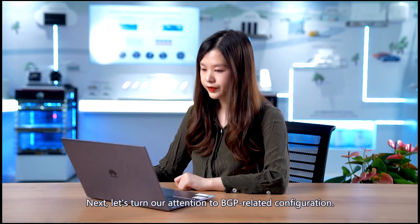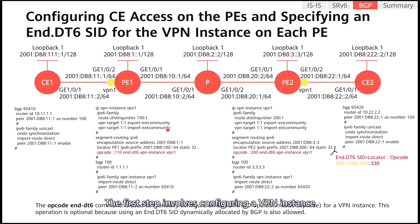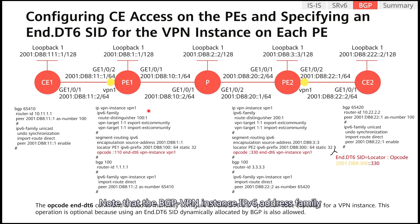Third, configure a BGP L3 VPN v6 peer relationship between P1 and P2 to advertise routes between C1 and C2. We'll focus on this part. Next, let's turn our attention to BGP L3-related configuration. The first step involves configuring a VPN instance and CE access on each PE. Note that the BGP L3 VPN instance IPv6 address family needs to be used on the PEs.